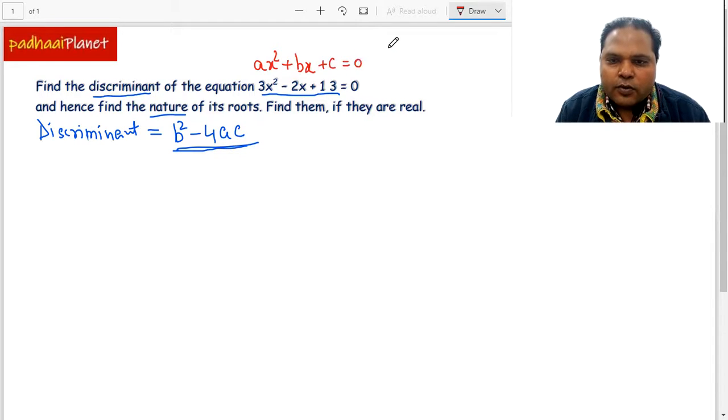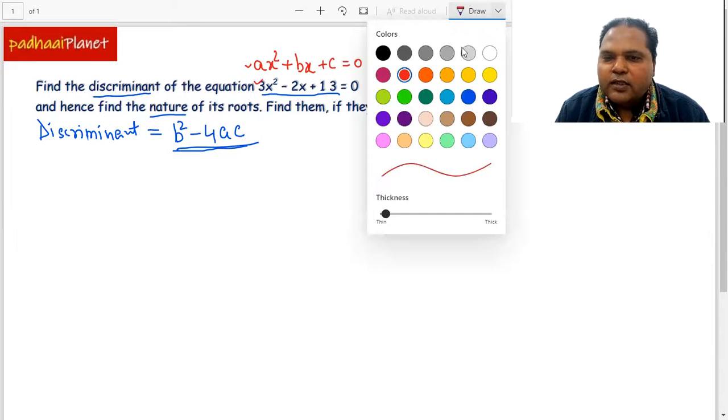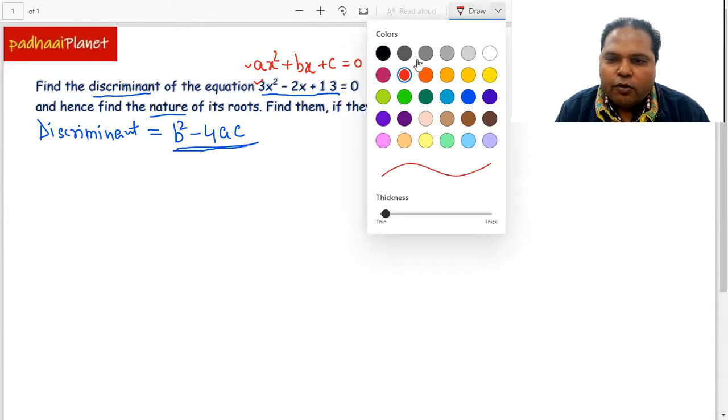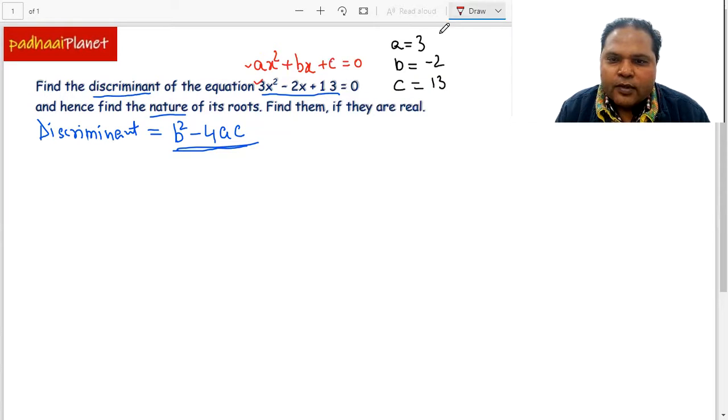The standard form of any quadratic equation is ax² + bx + c = 0. When we compare this equation with the given one, we clearly see that the value of a, which is the coefficient of x², is equal to 3. Similarly, the value of b is -2, and the value of c is 13. Now that we have got the values of all these three things...